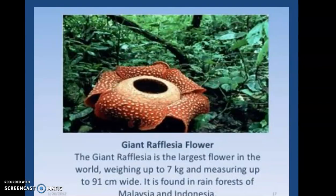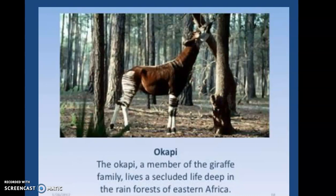The snow leopard is found only in coniferous forest, scrub, and mountain steep regions of the Himalayas and surrounding areas. It is considered an endangered species. The giant rafflesia flower is the largest flower in the world, weighing up to 7 kg and measuring up to 91 cm wide, and it is found in the rainforests of Malaysia and Indonesia. The okapi, a member of the giraffe family, lives a secluded life deep in the rainforest of eastern Africa. So here are some examples of endemic species.